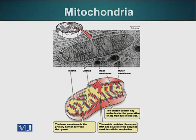Their ability to make proteins is limited — they have to import many proteins from the cell. However, mitochondria can make some proteins. The number of mitochondria can vary from cell to cell. Some single-cellular organisms have one large mitochondria. Eggs have several hundred thousand mitochondria. An average liver cell will have about a thousand mitochondria. The number of mitochondria depends upon the energy requirements of the cell.